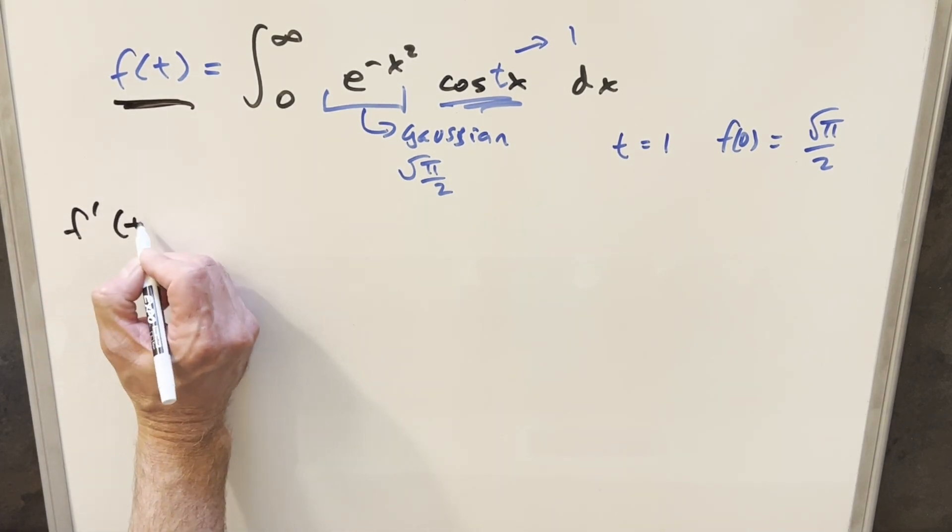Coming back and evaluating from 0 to infinity with minus t over 2 times f of t: when x goes to infinity, e to the minus infinity sends that term to 0; when x equals 0, sine of 0 is 0, so the entire boundary term vanishes. So f prime of t equals minus t over 2 times f of t. This is a separable differential equation, and if we solve it we'll have our f of t value.